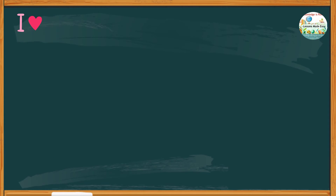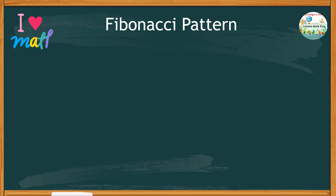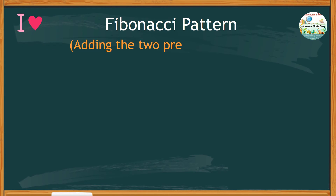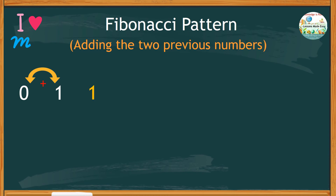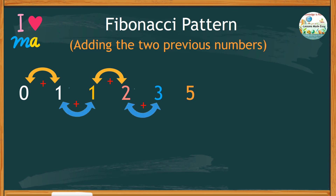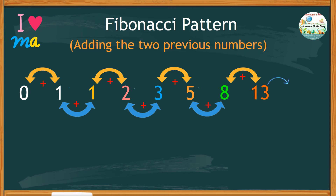Have you heard of the Fibonacci pattern? This pattern is a sequence of numbers in which each number is obtained by adding the two previous numbers together. This sequence starts with 0 and 1. Adding these two numbers gives us 1. Add the previous two numbers: 1 and 1 makes 2, then 1 and 2 makes 3, 2 and 3 gives us 5, 3 and 5 gives us 8, 5 and 8 is 13, and combining 8 and 13 gives 21.